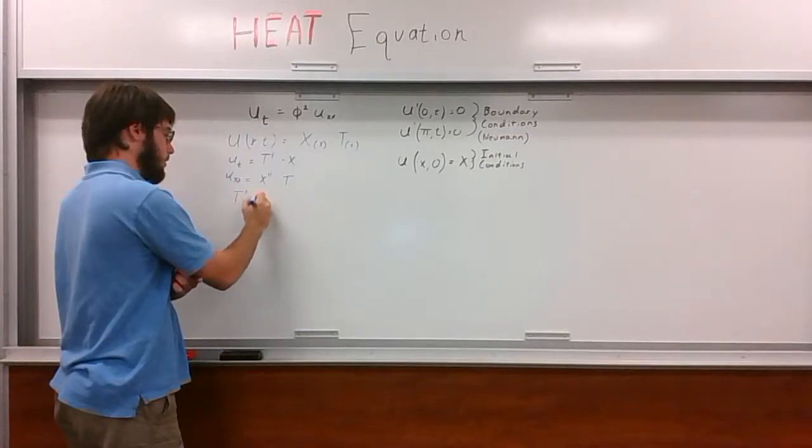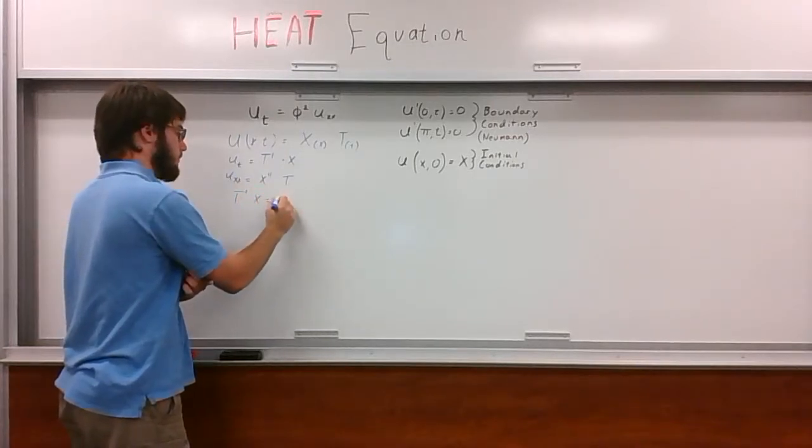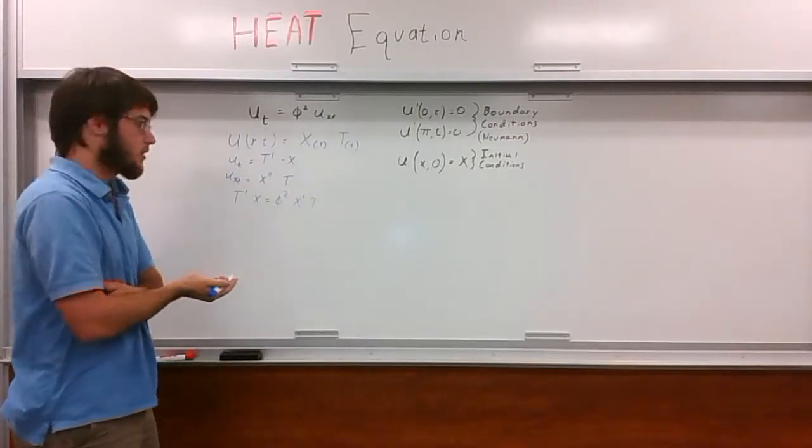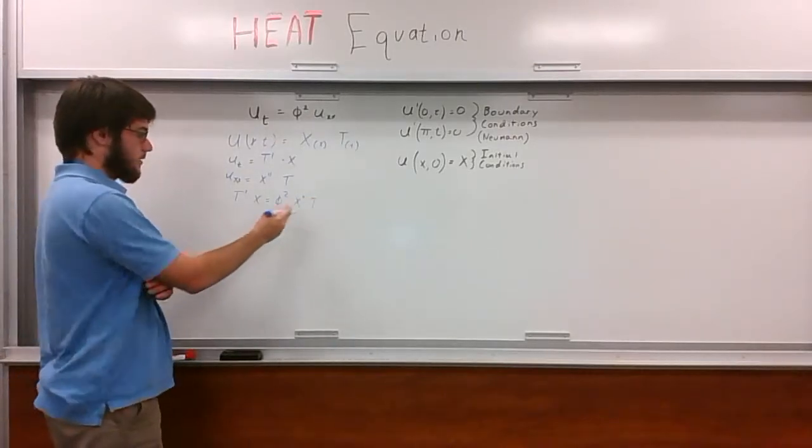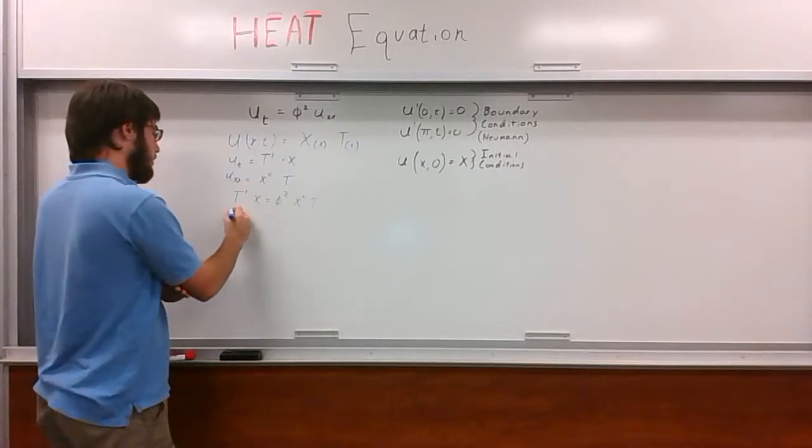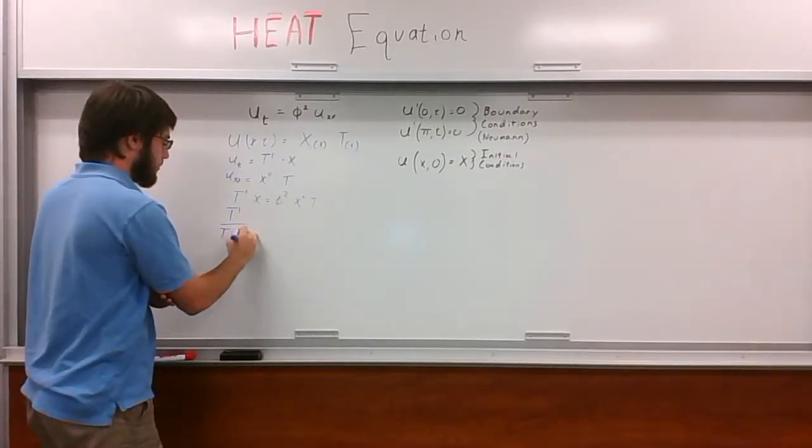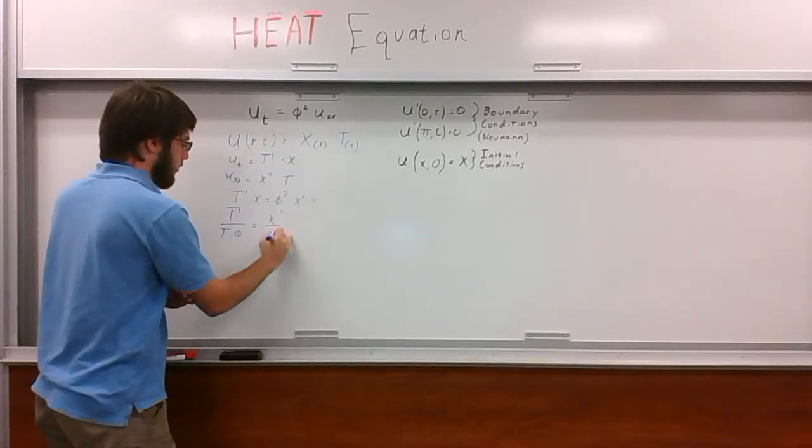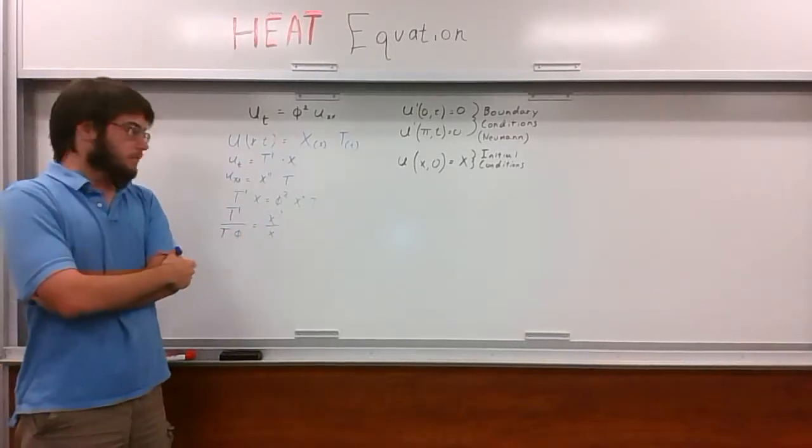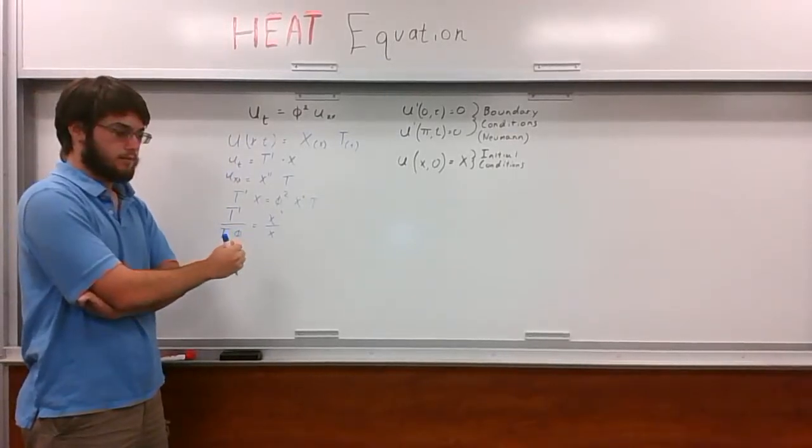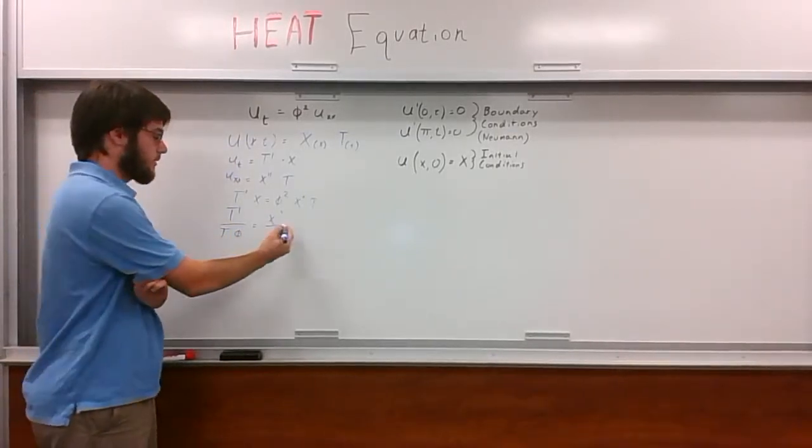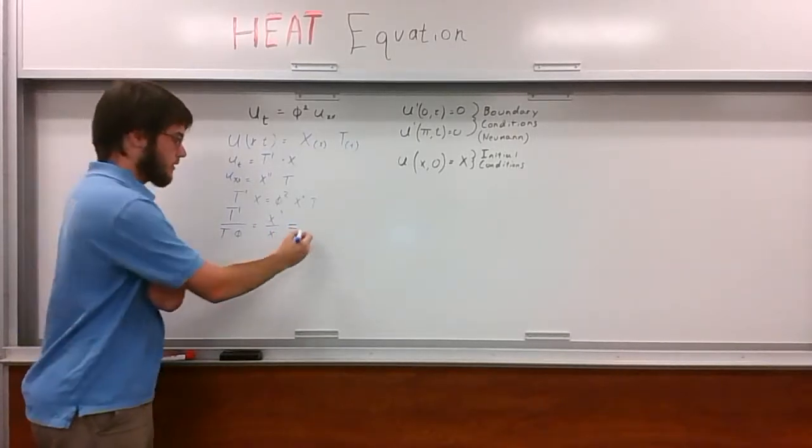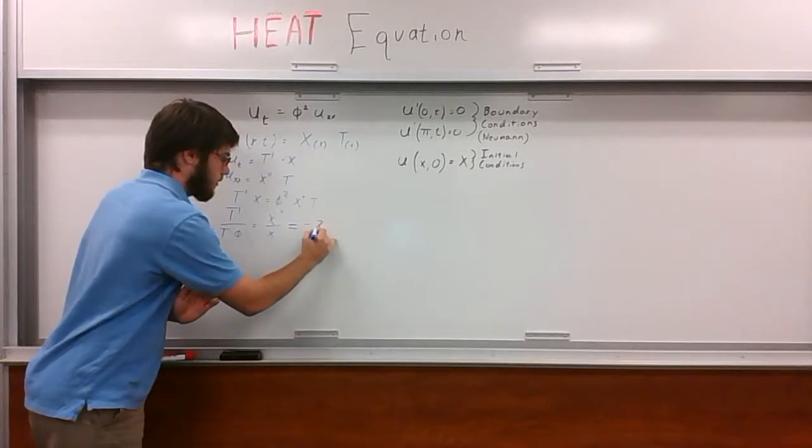t prime times x equals phi squared x double prime t. And after massaging it with some algebra, we can separate the like terms onto either side: t prime over t times phi squared equals x double prime over x. There is only one class of conditions that allows this to be true, and that is both of these are equal to a single constant, a separation constant, which we are going to call minus lambda.